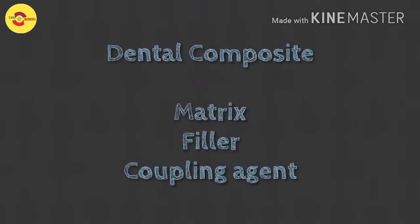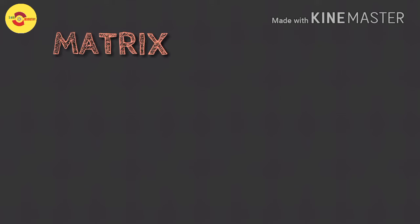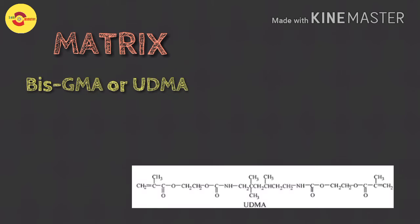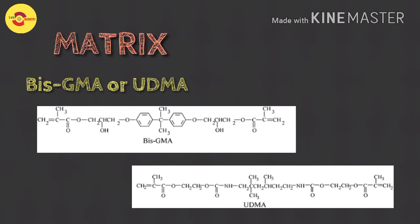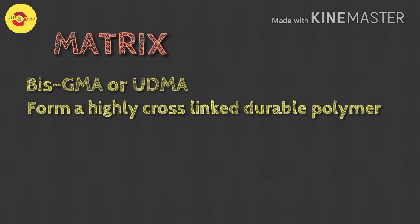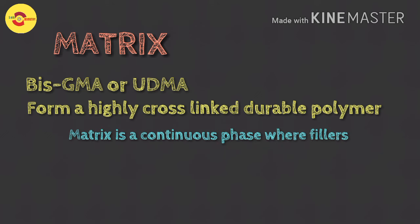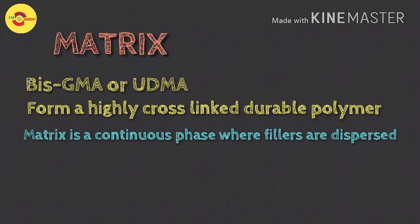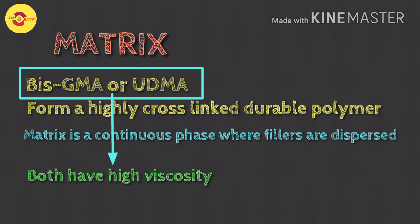Dental composites mainly have three major components: matrix, filler, and coupling agent. The matrix is mainly bis-GMA or UDMA. Bis-GMA stands for bisphenol-A glycidyl dimethacrylate, and UDMA stands for urethane dimethacrylate. They usually form a highly cross-linked, strong, rigid, and durable polymer structure. This matrix forms a continuous phase in which the reinforcing filler particle is dispersed.